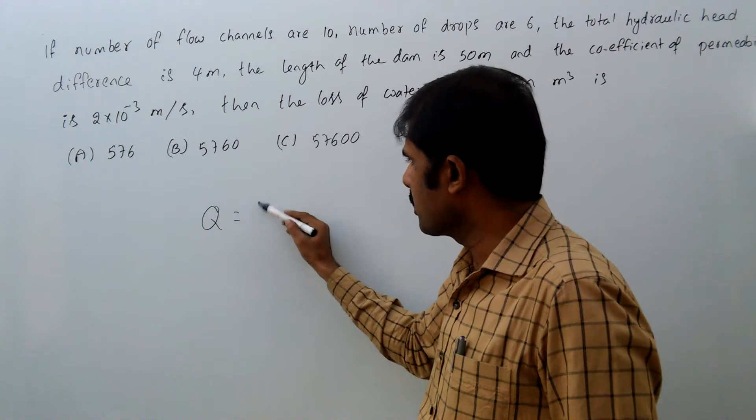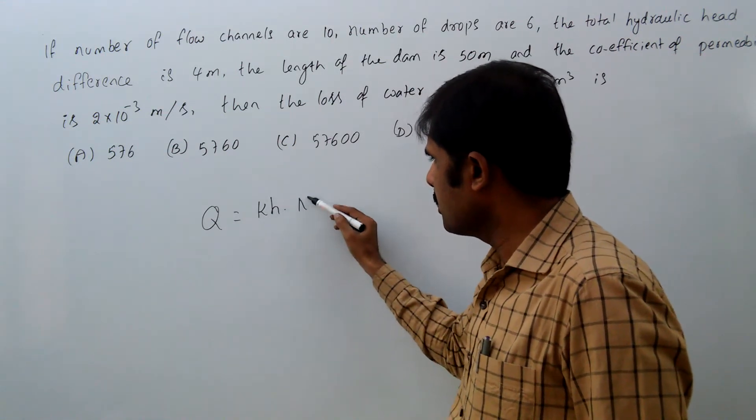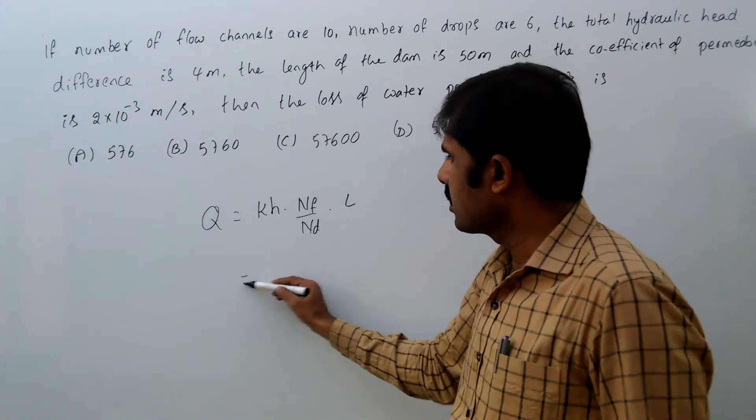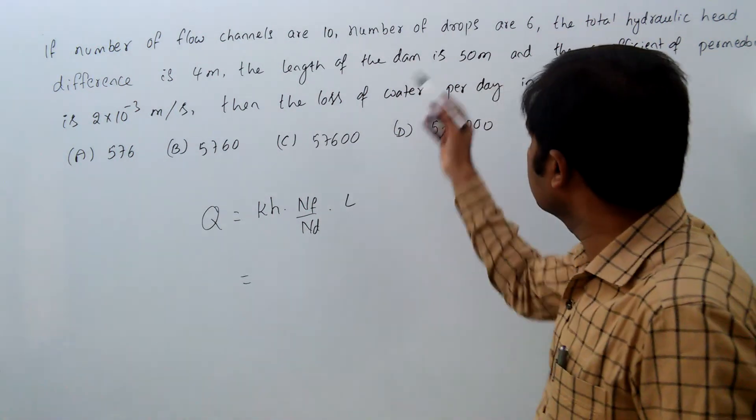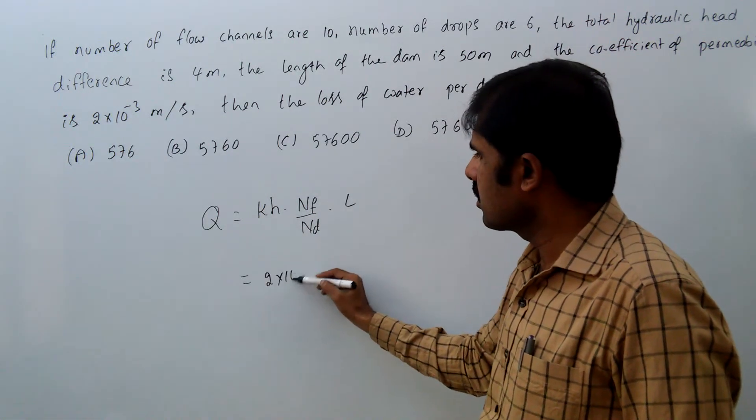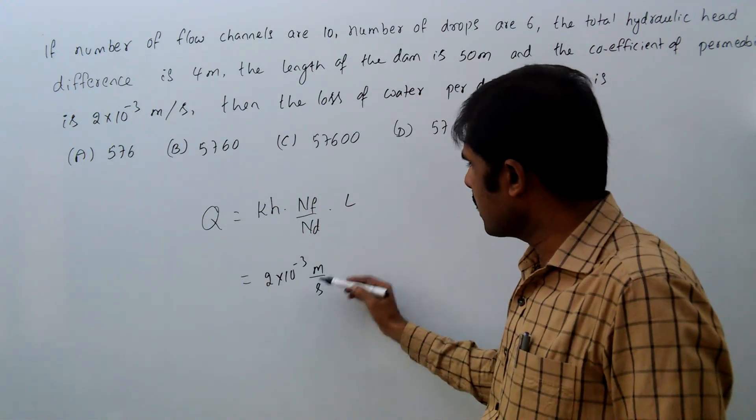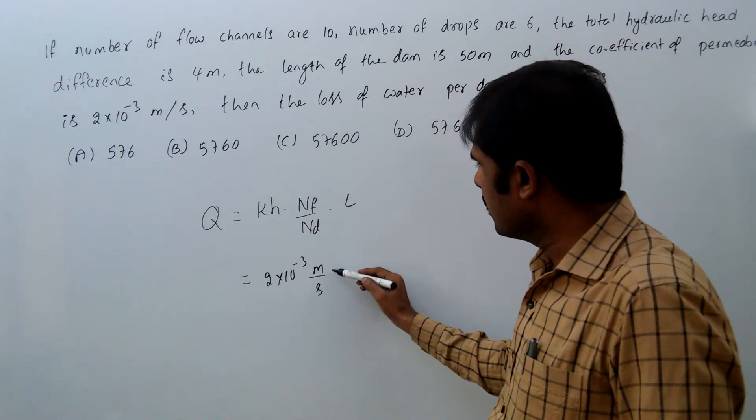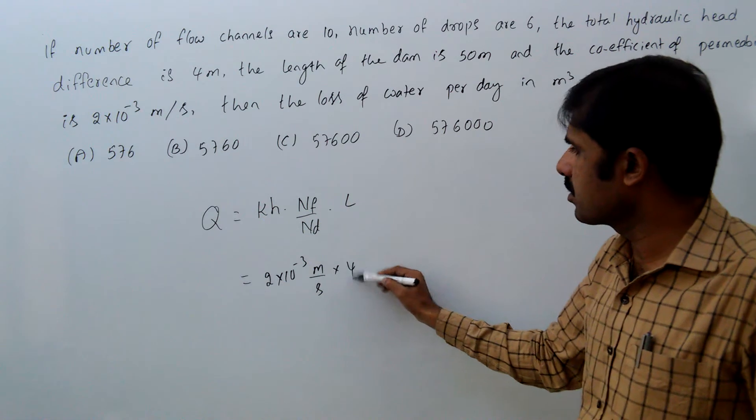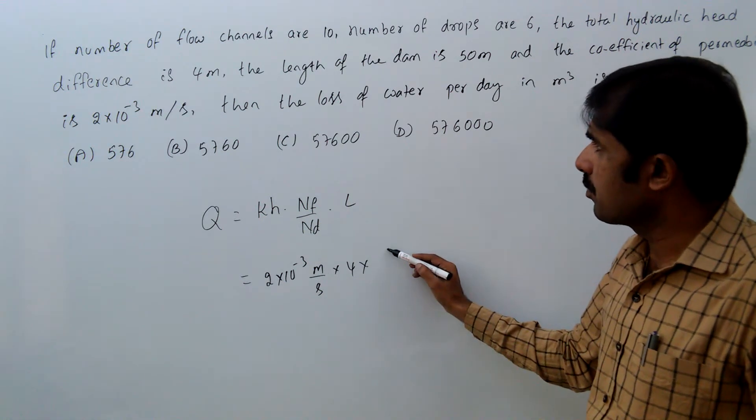So this is the discharge formula: Q = kh × Nf/Nd × L. So k here is 2×10^-3 meters per second, h is 4 meters, number of flow channels